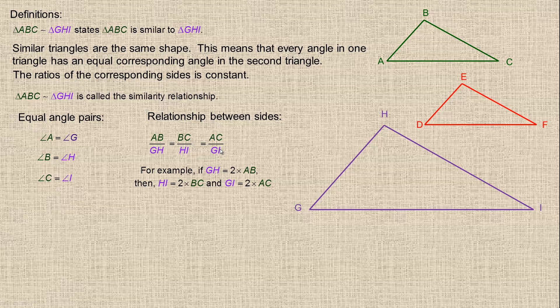This ratio, if I write it out, would actually be equal to 1 to 2. For every one part on the smaller triangle, it's twice as much in the second. So that's the ratio between the sides, which means the sides of GHI are double the sides of ABC, because 2 is double 1.